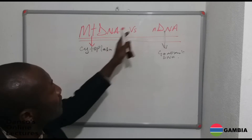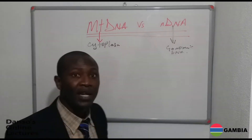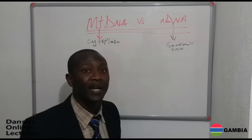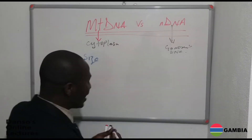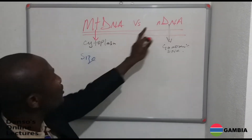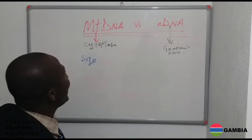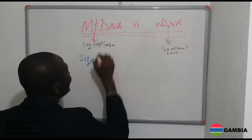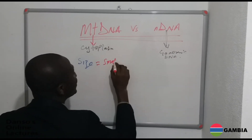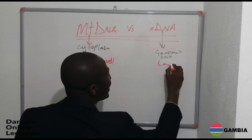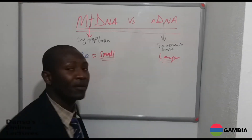They are different from nuclear DNA in many respects, and those are the things we are going to concentrate on. First, by looking at the size of these two DNAs, mitochondria DNA is small and nuclear DNA is larger than mitochondria DNA in terms of base pairs.